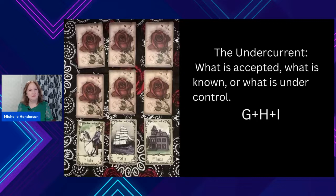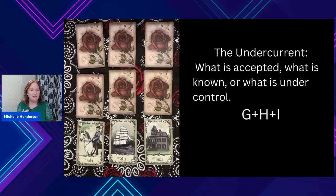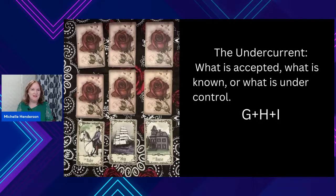The undercurrent, which is on the very bottom, is always at the baseline of all the cards — what is accepted, what is known, or what is under control by the sitter. We have the rider, the ship, and the house. They have an awareness that they do want to make changes in their life. Something needs to change, and they may want to start new traditions and make new discoveries. So this person is very aware of these things.